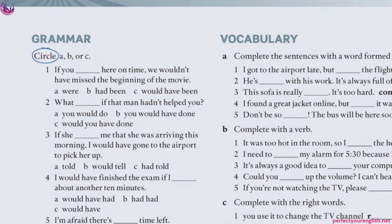Number 3: 'If she had told me that she was arriving this morning, I would have gone to the airport to pick her up.' Again conditional type 3. She didn't tell me, so I didn't go to the airport. If she had told me, I would have gone. The if-clause has past perfect 'had told,' and the result clause has 'would have gone' — third form of 'go.'